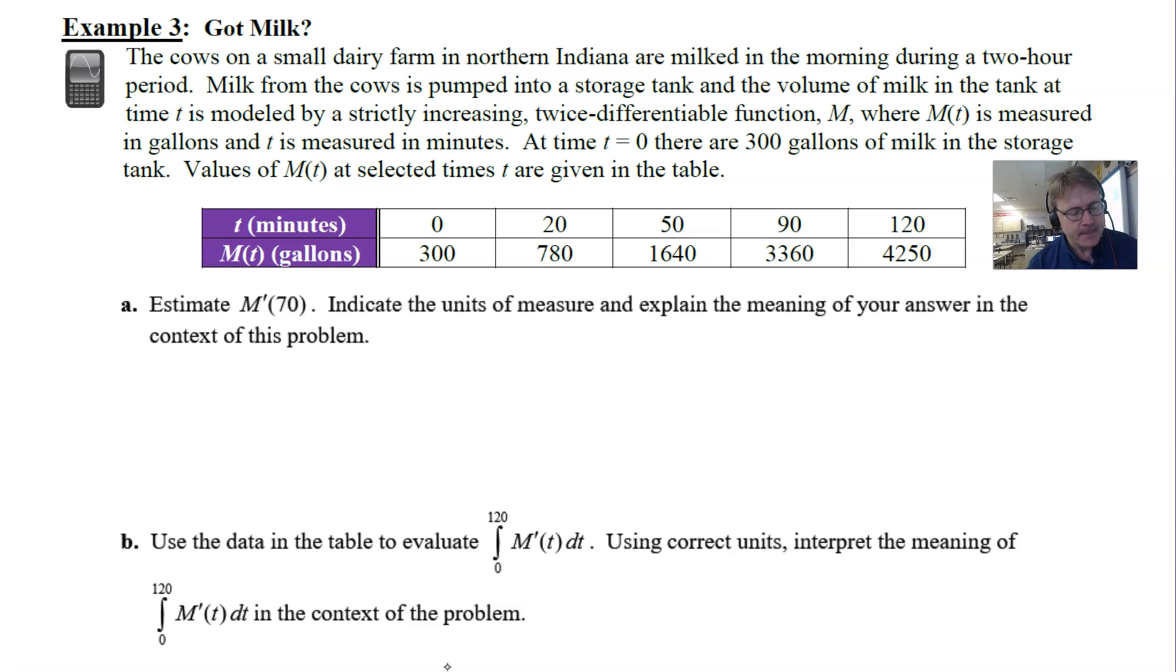An idea that we talked about a long time ago. You want to indicate the units of measure and explain what that answer means. Well, again, when you're taking a derivative of a table, the only way that you can possibly pull that off is to estimate and that's what the directions say. So where do you find 70 for a time in your table? Well, you don't. It's probably going to be somewhere between 50 and 90 though.